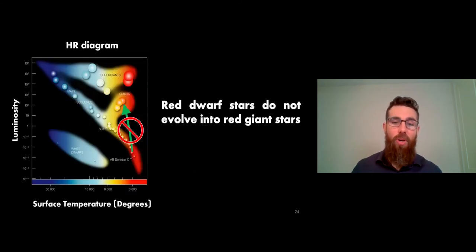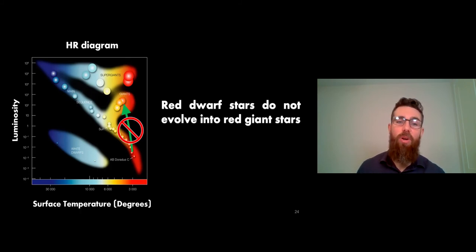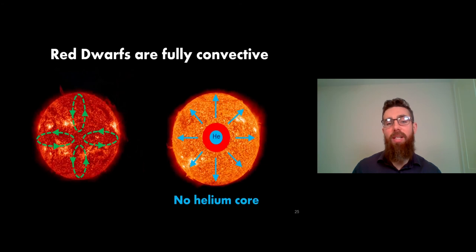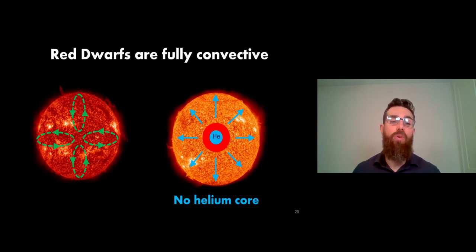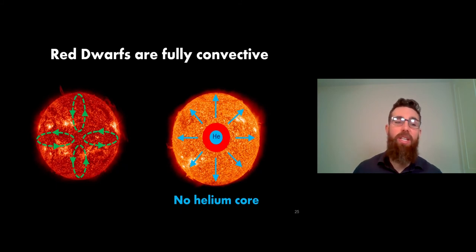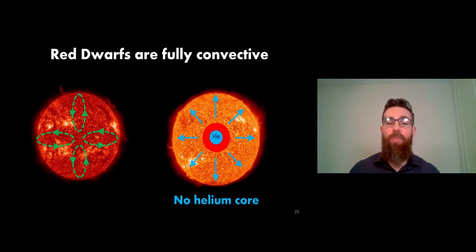Red dwarf stars are at the bottom of the main sequence and do not evolve into red giant stars - these small stars never go into a red giant phase. Why? They're fully convective, so the whole star is convective, meaning they never end up with a helium core. They never have the stage where a hydrogen shell around the helium core undergoes the red giant phase. Because they're fully convective, they survive on the main sequence the longest and are very efficient, turning more of their hydrogen into helium.